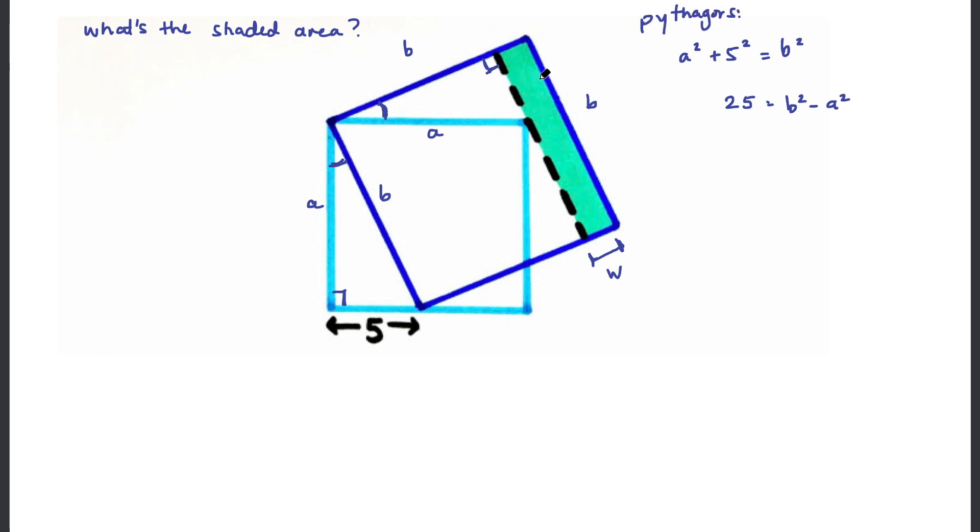Next, I want to also have a relationship for this shaded area. So how would we define this shaded area? Well, this would be the length times the width, so b times w.